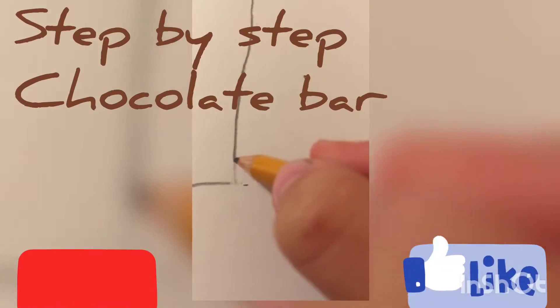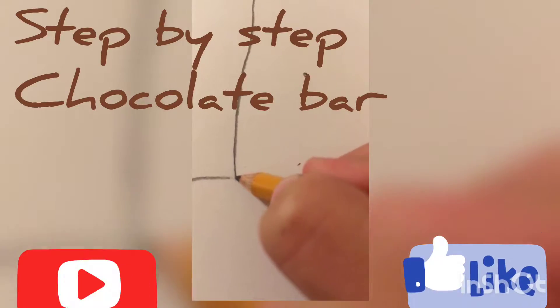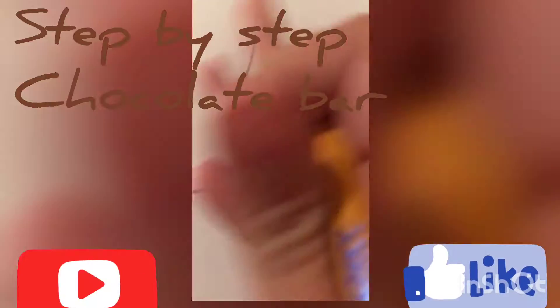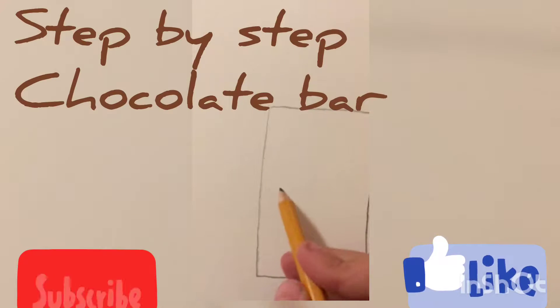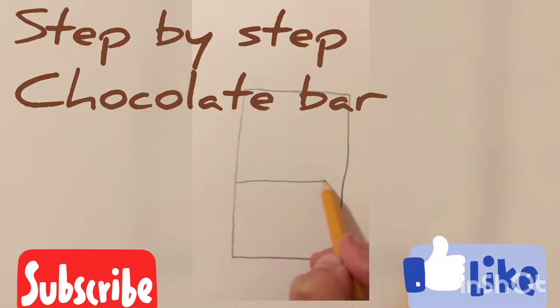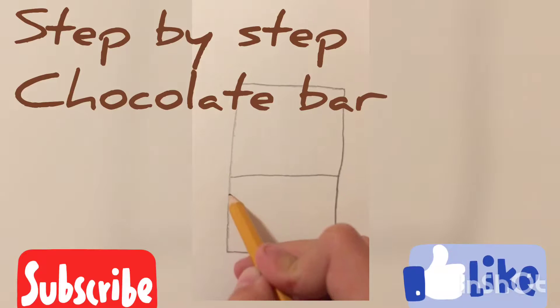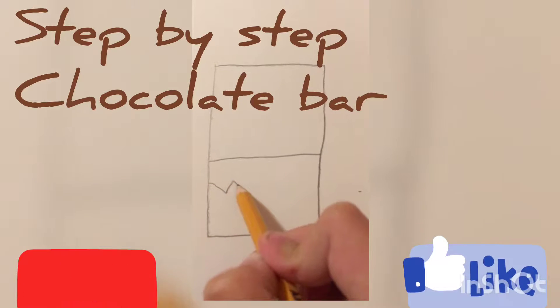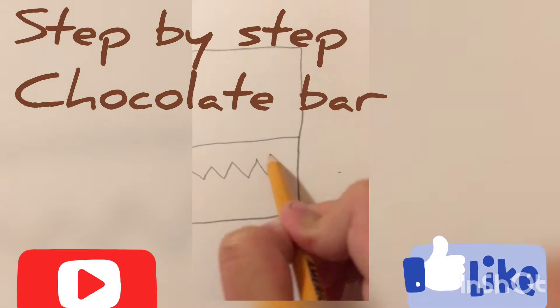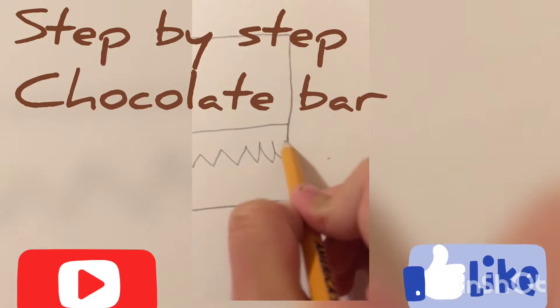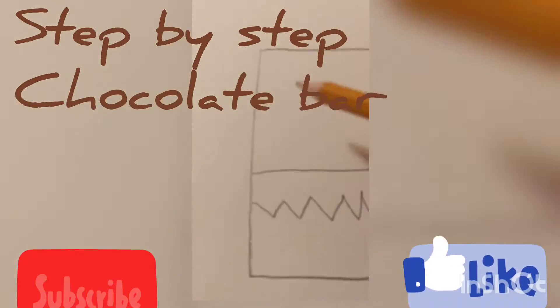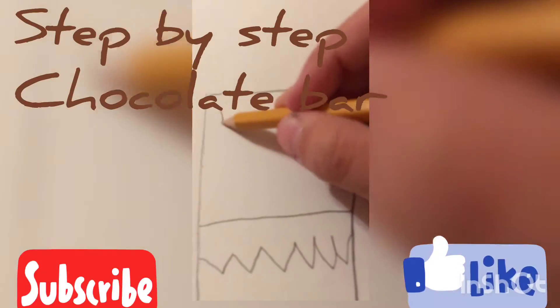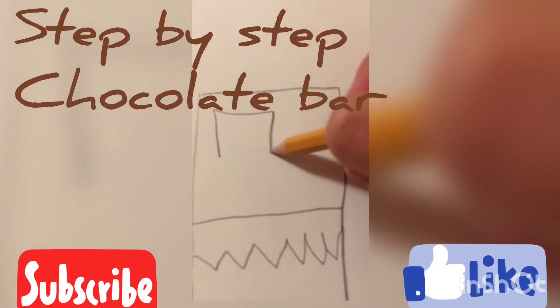So that's my chocolate bar. Then you do something like this and you go crazy with mountains. Let me close it up like that. Then you can draw four squares.